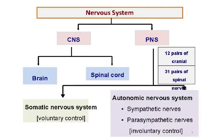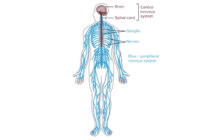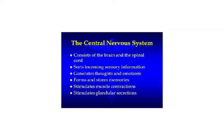To summarize: the nervous system is divided into CNS and PNS. The CNS is made up of the brain and spinal cord. The PNS consists of 12 pairs of cranial nerves and 31 pairs of spinal nerves. The CNS sorts incoming sensory information, generates thoughts and emotions, forms and stores memories, stimulates muscle contractions, and stimulates glandular secretions.